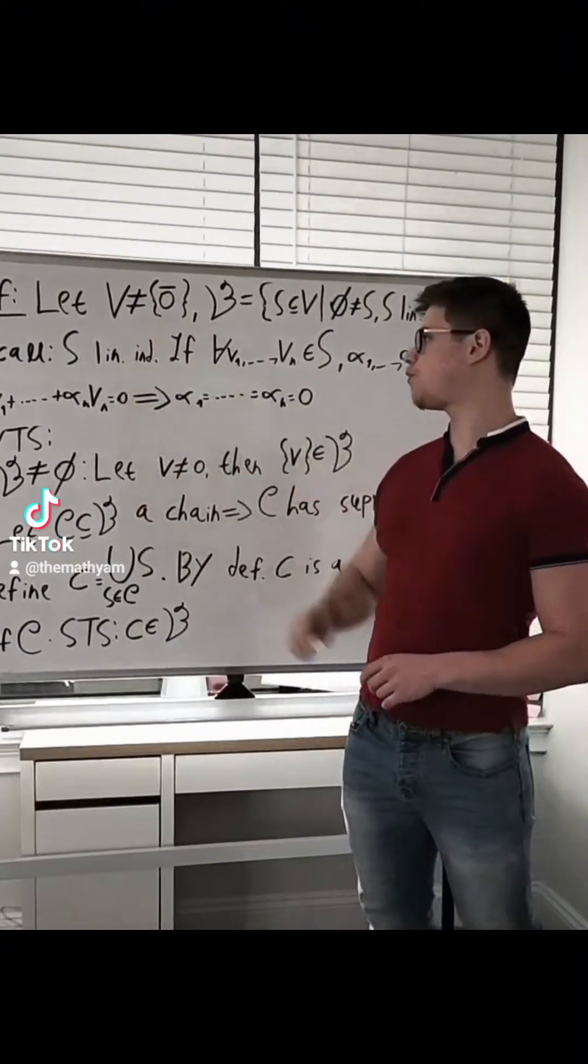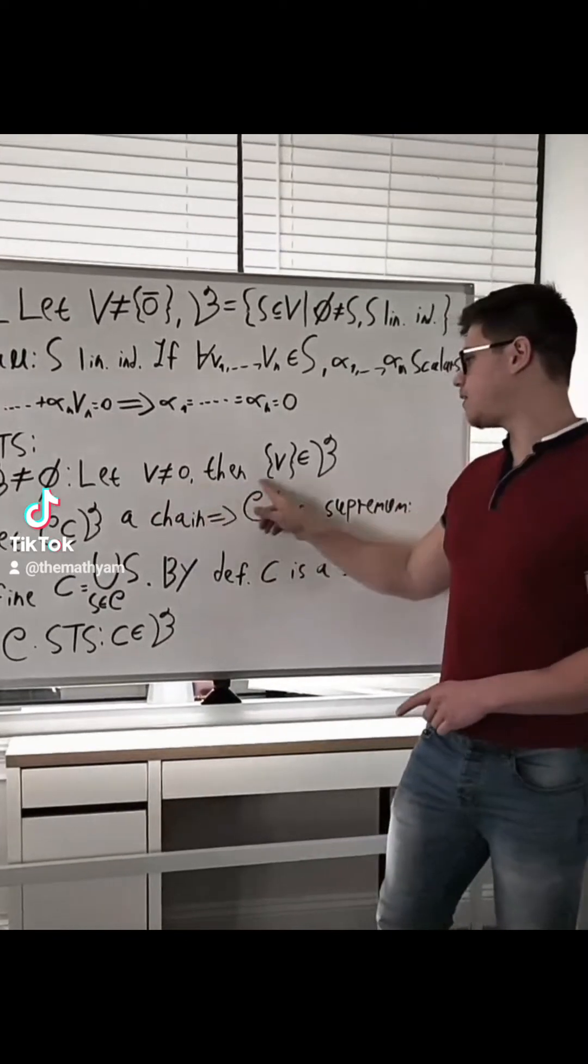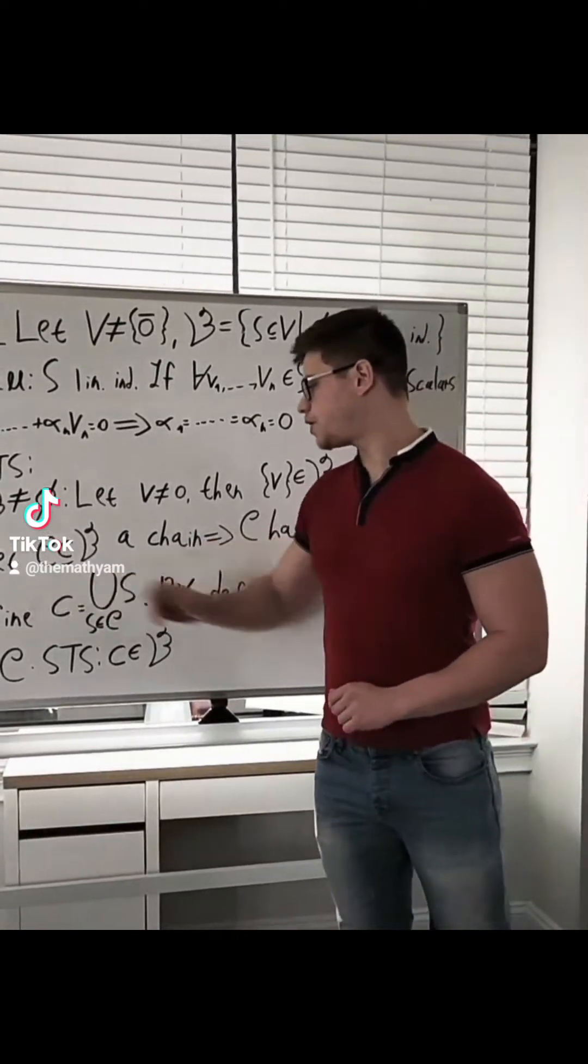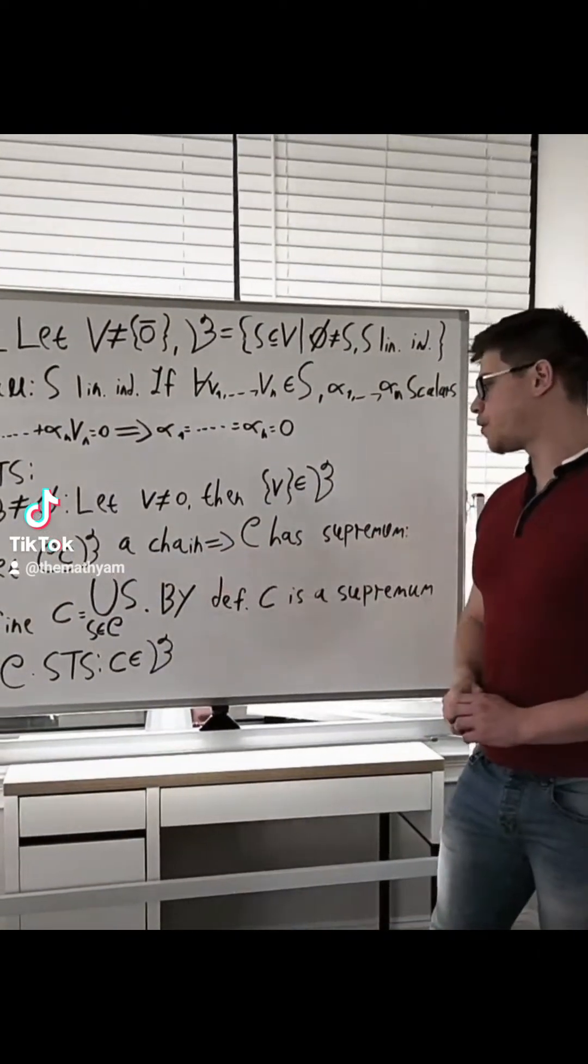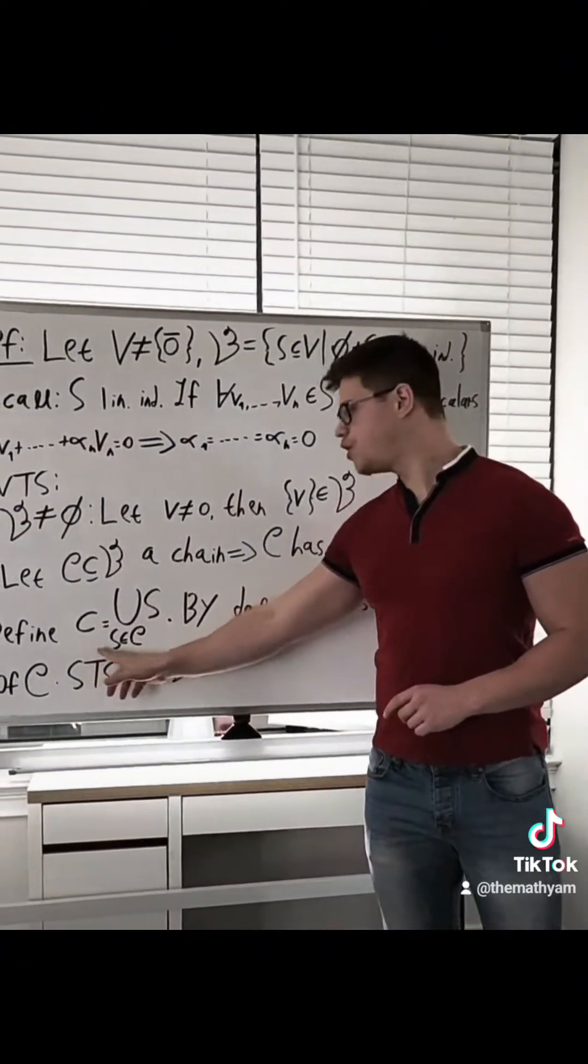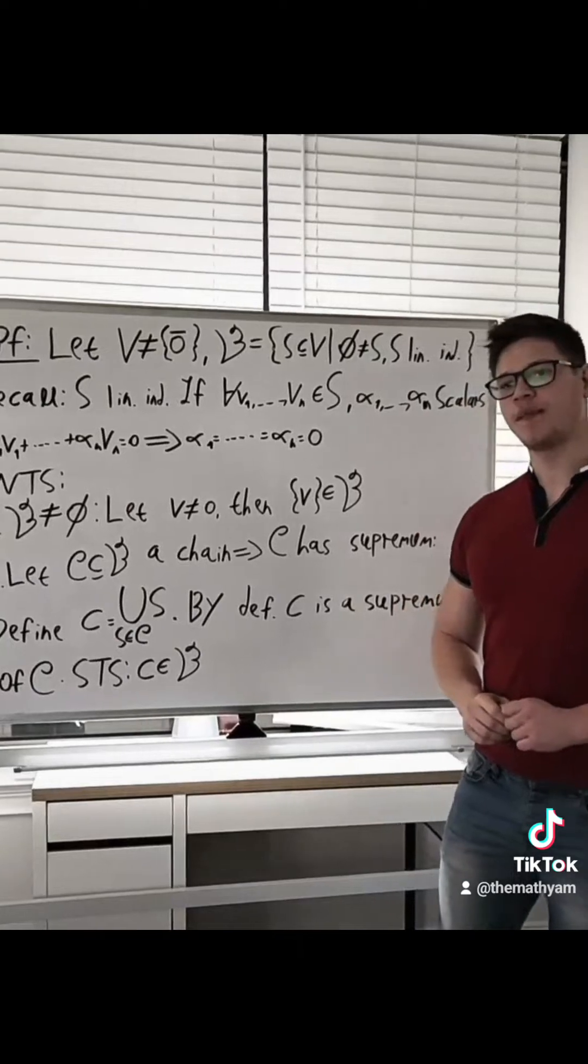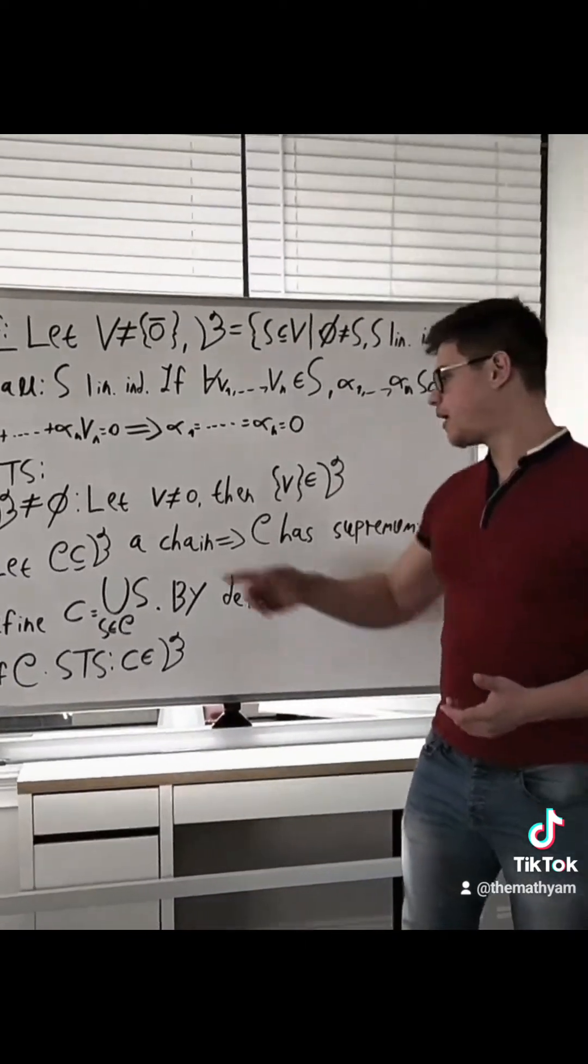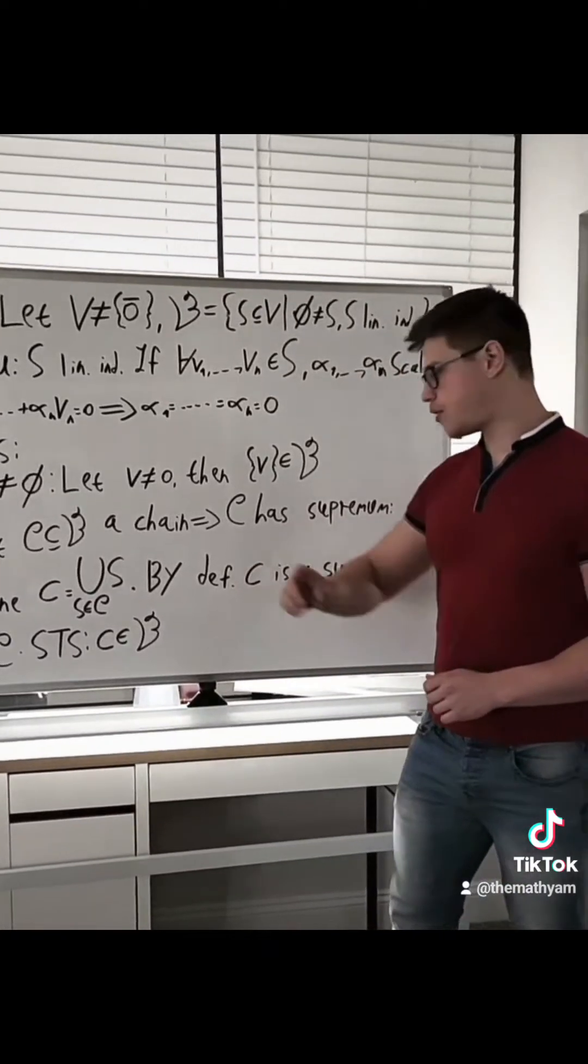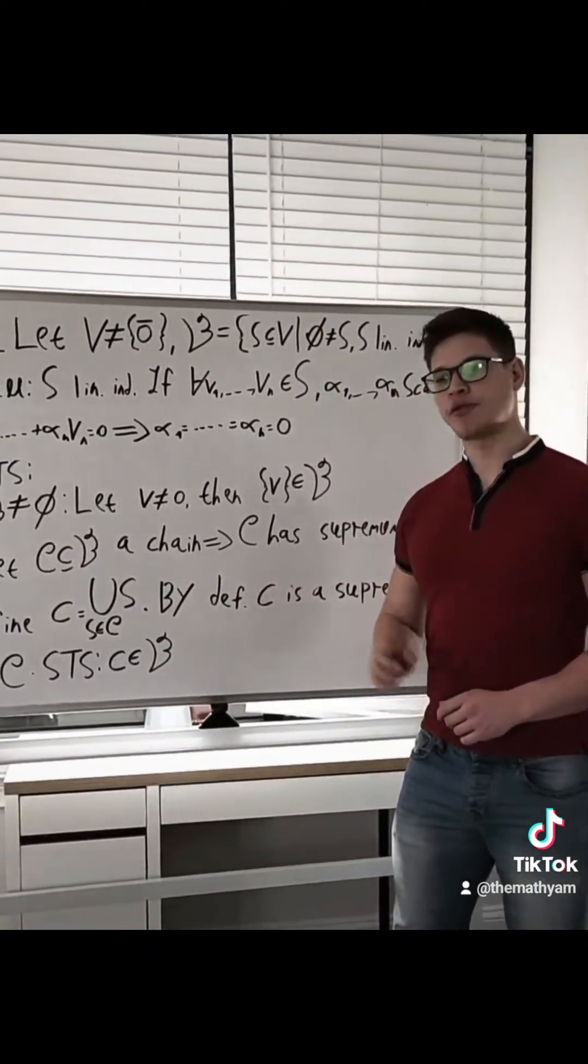Because we chose V to be non-zero, we just take some element v, and then this set is linearly independent, so it is inside of B. Next, we want to show that every chain has a supremum. So if we define this set C to be just the union of all the sets S inside of this chain, then clearly it's a supremum. Every set S is contained inside of C, so it suffices to show that this set is inside of B. In other words, it's linearly independent.